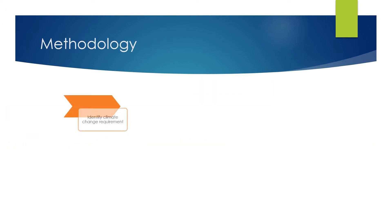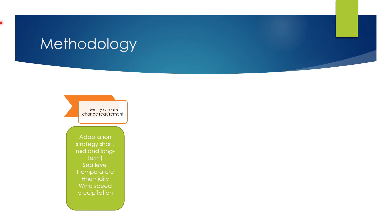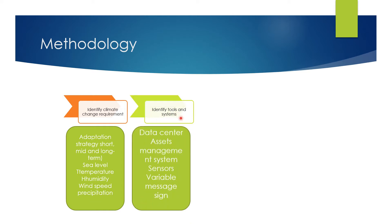In the methodology, we have four main items. The first is to identify the climate change requirements as an adaptation strategy — short, mid, and long-term plans — which includes five identified elements based on a study done in the United Arab Emirates: sea level, temperature, humidity, wind speed, and precipitation. The second is to identify the tools and systems, such as data centers, asset management systems, sensors, and variable message signs that collect data and communicate information to decision makers.